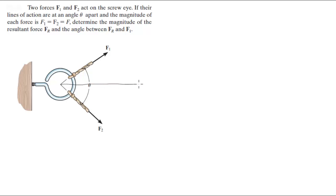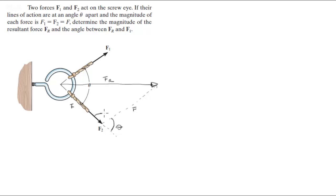Since these two forces are exactly the same, the resultant force is going to point straight to the right. If I redraw the parallelogram with F1 over here, it's going to form a triangle. These two sides are equal to F, this side equals FR, and these angles are theta and 180 minus theta.